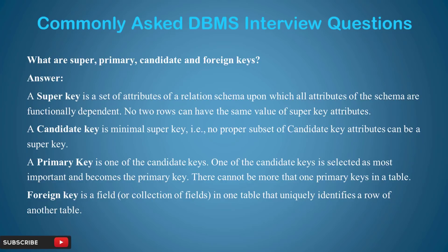In a database schema, there can be more than one candidate key. Importantly, a candidate key is always a super key, but a super key cannot necessarily be a candidate key. Third is the primary key — one of the candidate keys is selected as the most important and becomes the primary key. There cannot be more than one primary key. So while there can be multiple candidate keys, there can only be one primary key. In our example, we will make student number the primary key.